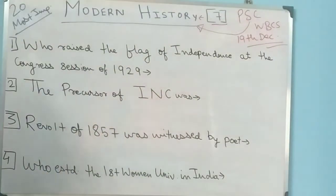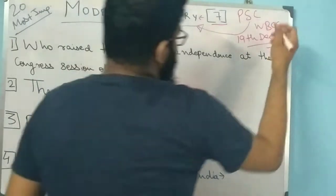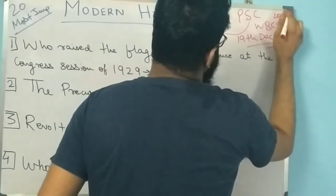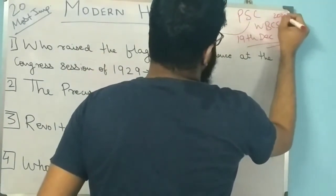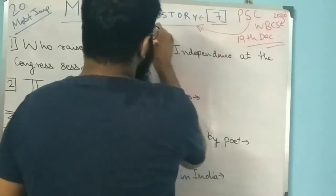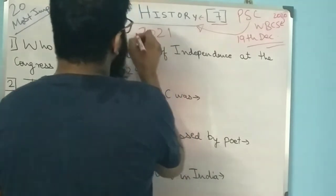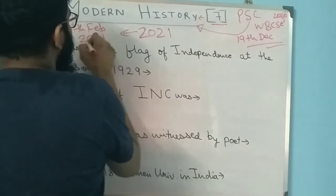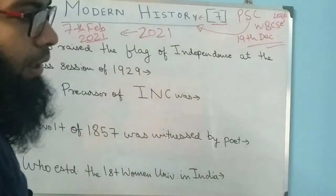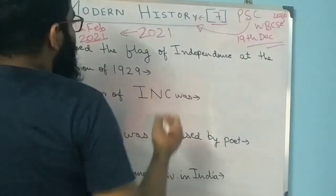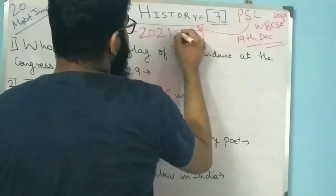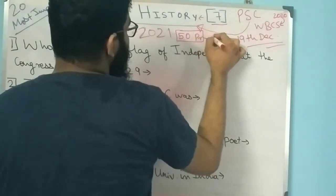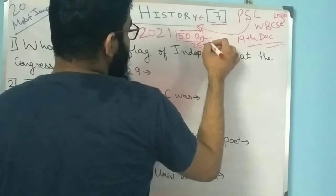Like we have WBACS Mains on 19th December - the schedule is already given online, you can check from the website. 26th December will have the mains for those who gave the 2020 prelims. The 2021 prelims date is also given. In WBACS prelims, history has 50 marks, and out of that, 25 marks is for modern history.